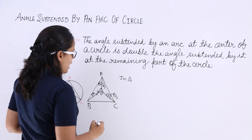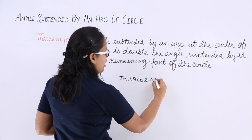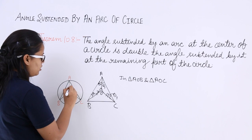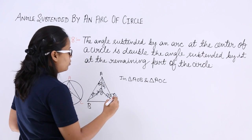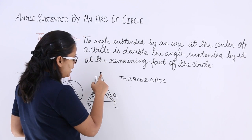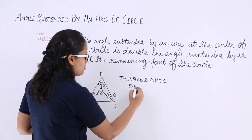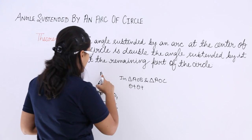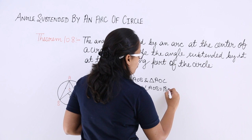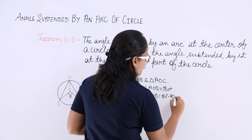In triangle AOB, the sum of angles equals 180°. So: θ + θ + angle AOB = 180°. Therefore, angle AOB = 180° − 2θ. Let this be equation 1.